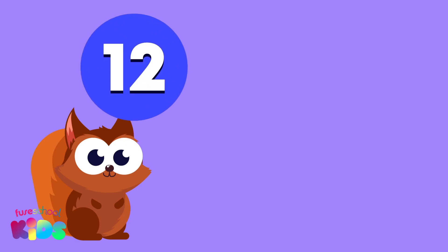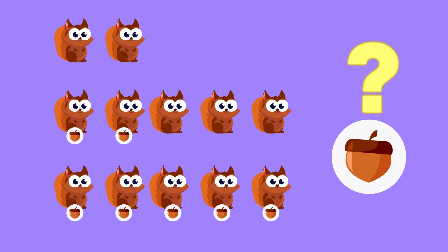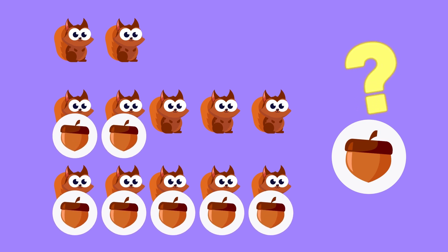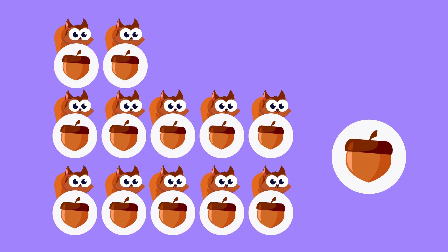There are 12 squirrels and 7 acorns. The squirrels want to know how many more acorns they need so that they can each have one.